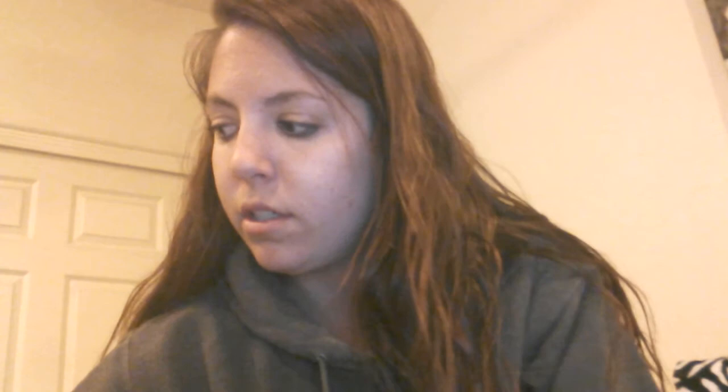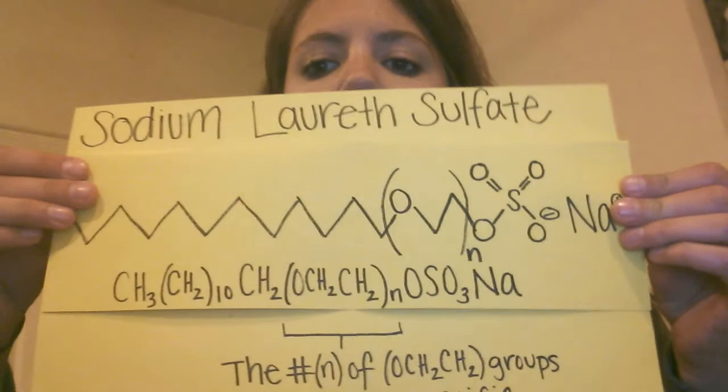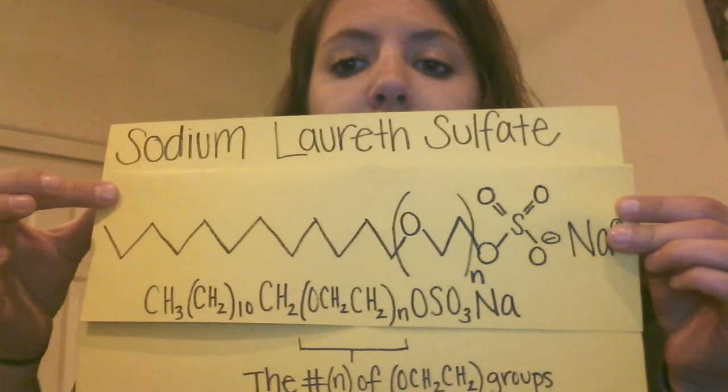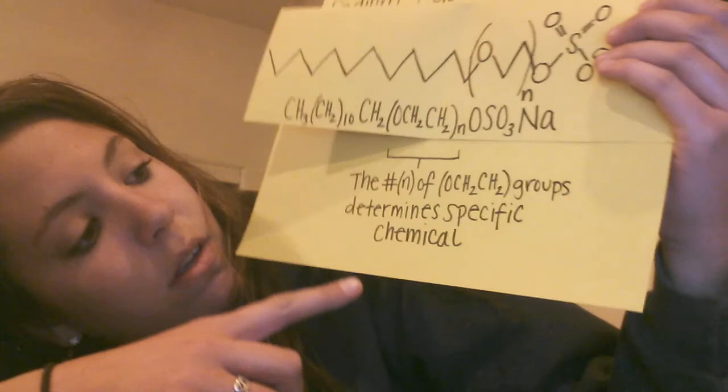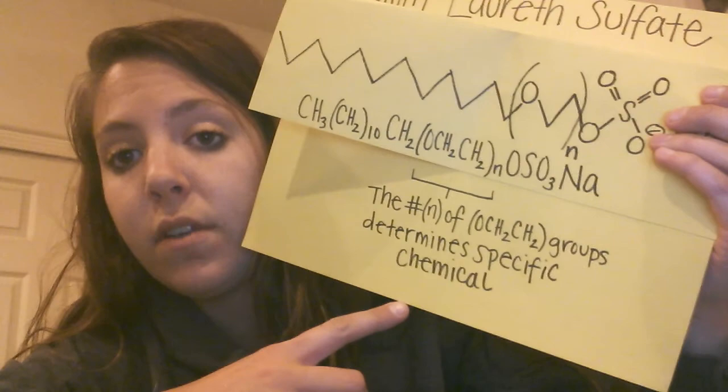First, I'm going to show you the chemical structure. As you can see, it is CH3CH2(10)CH2OCH2CH2N, where N stands for the number of OCH2CH2 groups, which determines the specific chemical, and then OSO3NA.